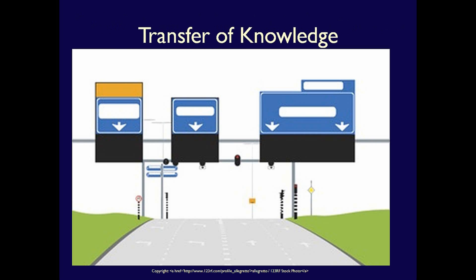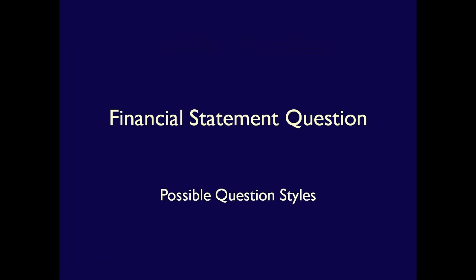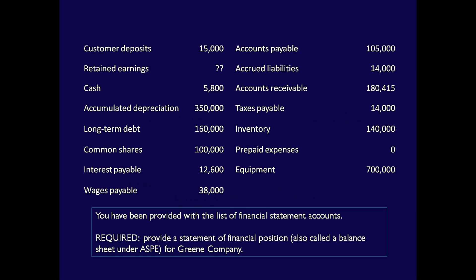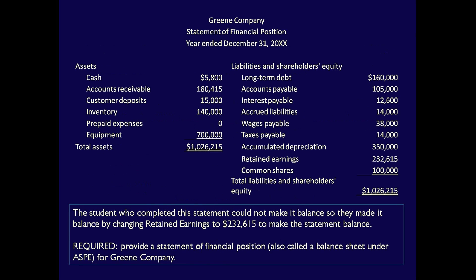How can we combat the issue of not being able to transfer knowledge to new situations? It's really important to practice different types of questions. In addition, by realizing that this is a common problem, you're able to focus on the required in the question. The required tells you what you need to do. How the question is structured is immaterial and should be ignored. Note that the information may be provided in a different format, but the required is still the same — understanding that is key in solving problems.